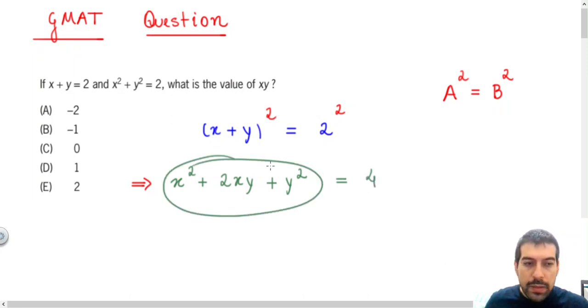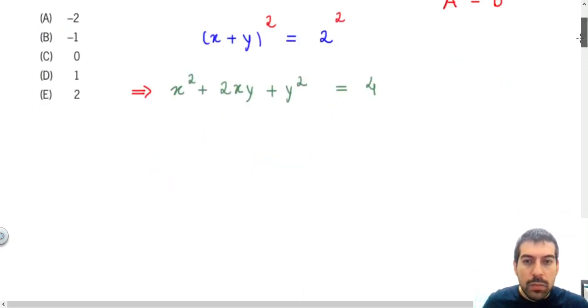If you don't remember this, no problem, you just need to multiply x plus y times x plus y, and you can distribute those terms using the product.